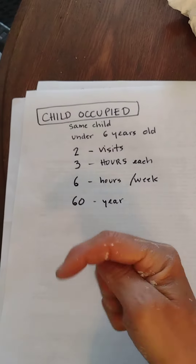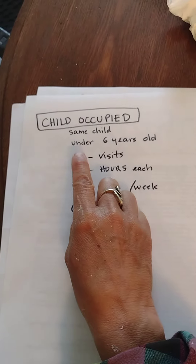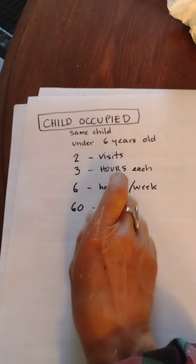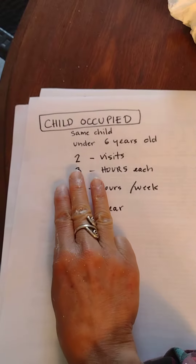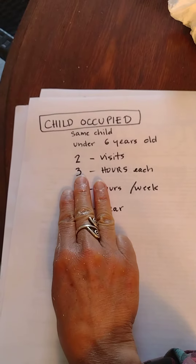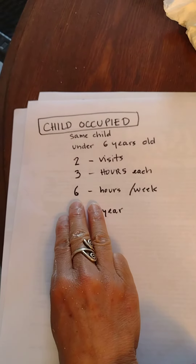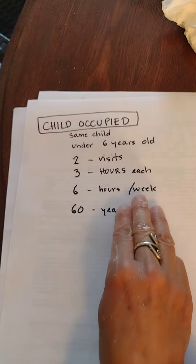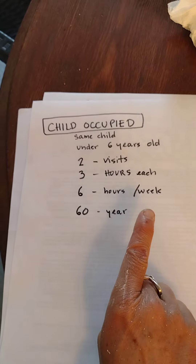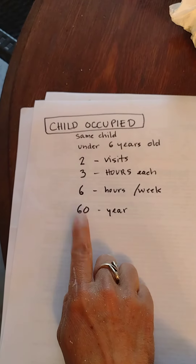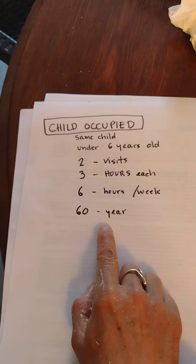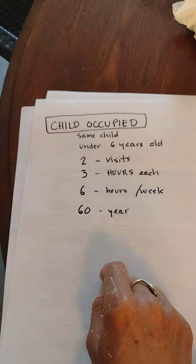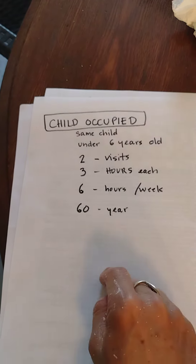If David comes to me Tuesdays and Thursdays — two visits per week, for three hours each visit — that makes six hours every week, or 60 hours every year. Then my house is child occupied.